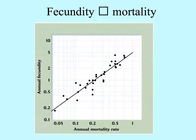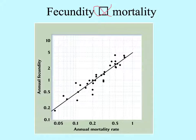For all organisms, fecundity is directly correlated with mortality. So the more offspring an individual has, the sooner it will die. In a population, the more individuals reproduce, the greater their mortality. And this is generalizable to all species.